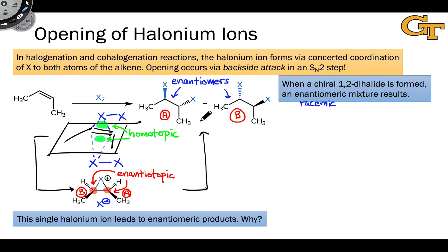Since there's no bias — no spatial or stereochemical bias for one enantiomer over the other — we expect a racemic 50-50 mixture of the two enantiomers.